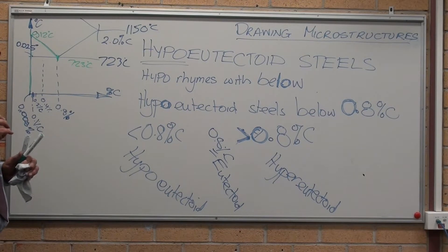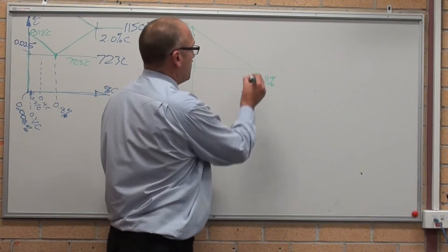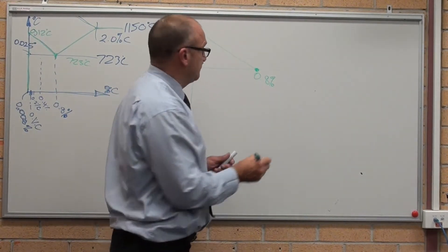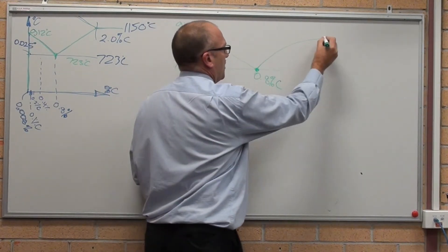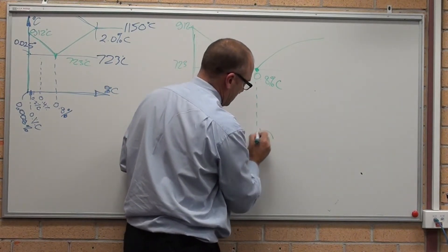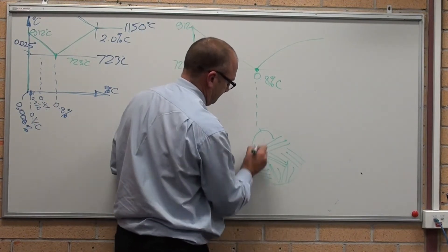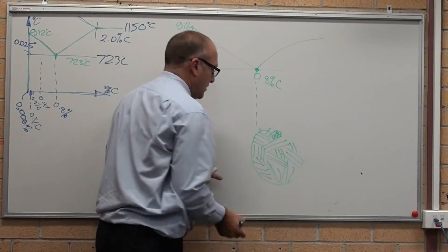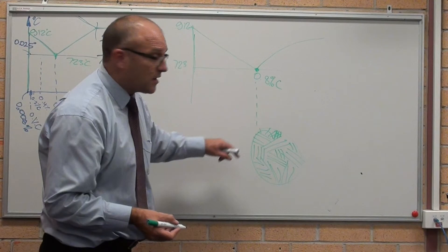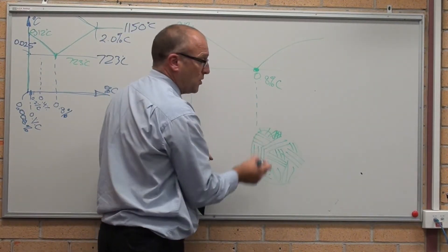Let's have a look at how that relates to microstructure. As we know, at 0.8% carbon, the microstructure here is fully pearlitic, like so. The microstructure of a eutectoid steel is 100% pearlite.